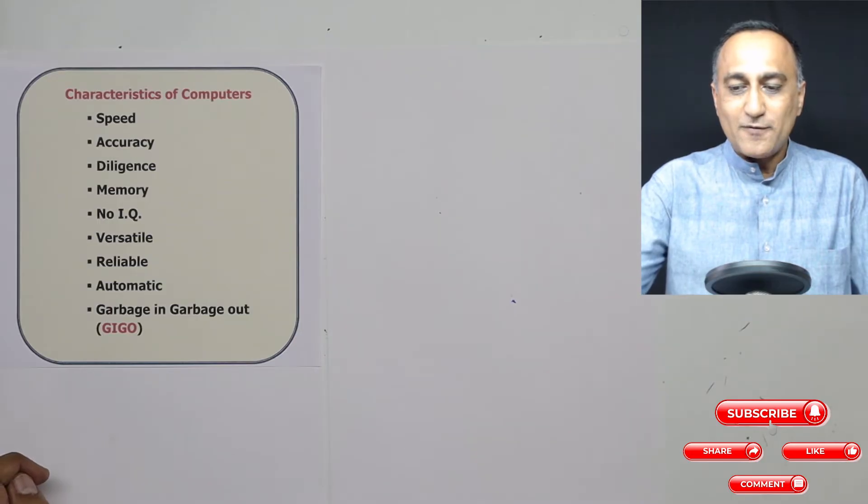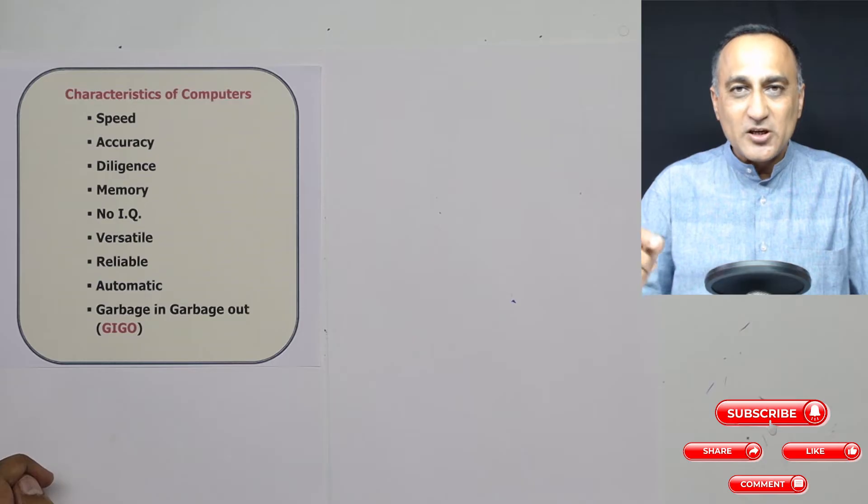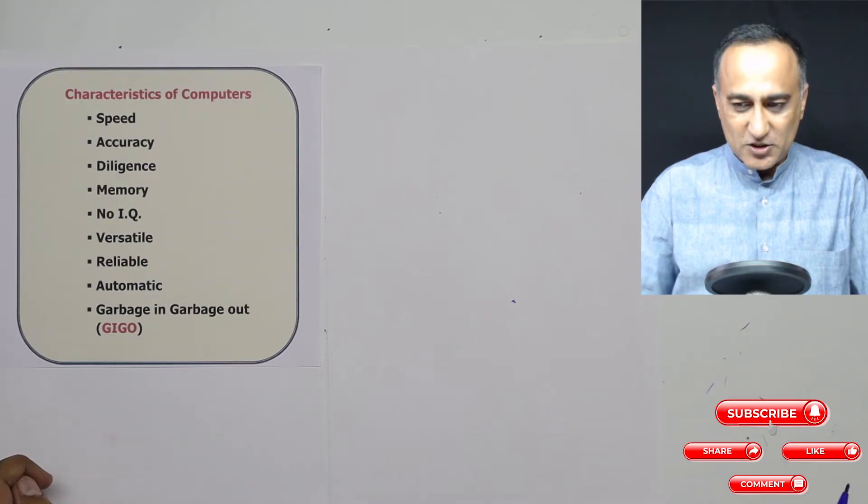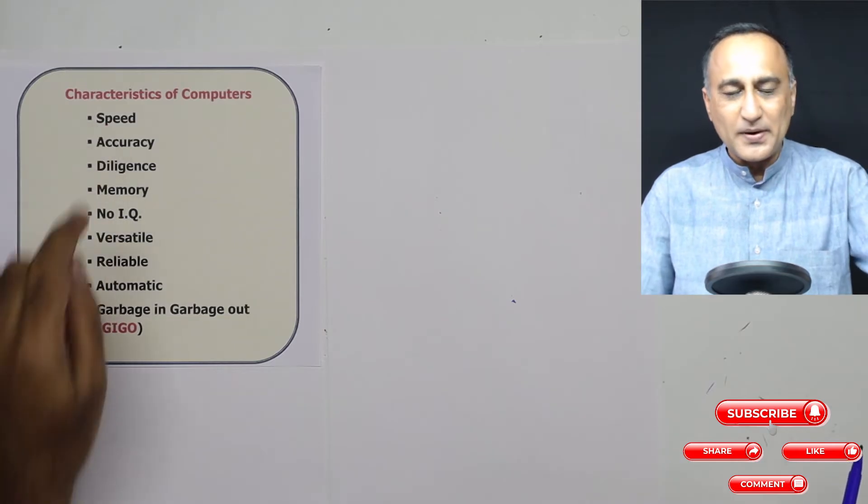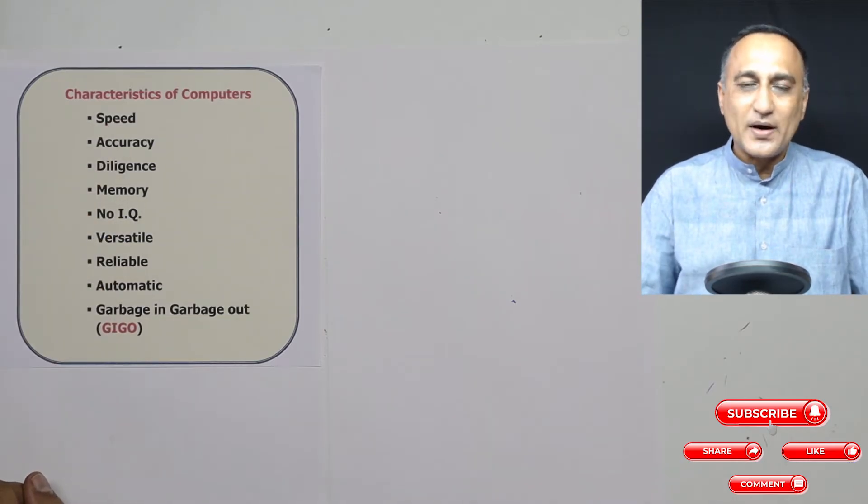So the biggest advantage of a computer is it is able to process or execute commands or instructions at a very, very high speed. That's what you mean by speed. And that is one of the reasons why it is used in so many places including cars. There are computers within cars nowadays.